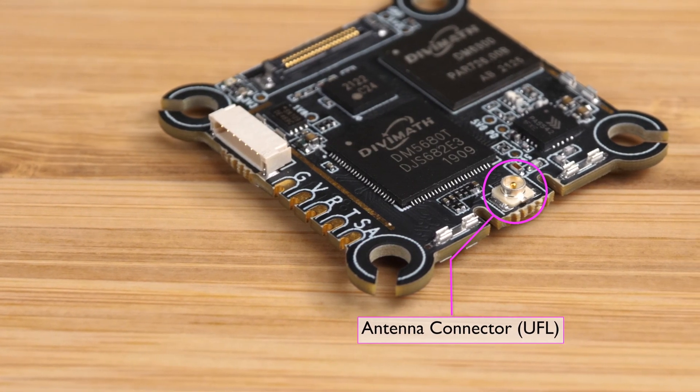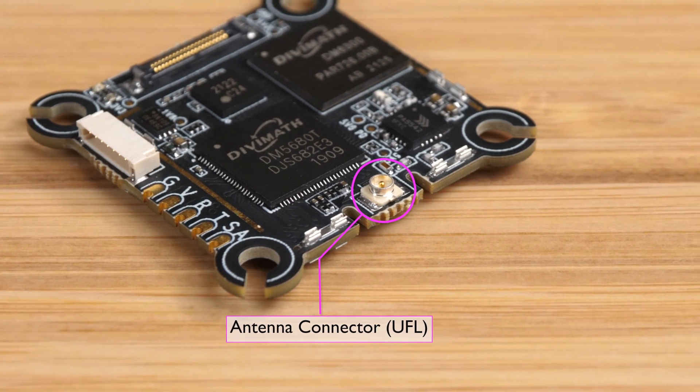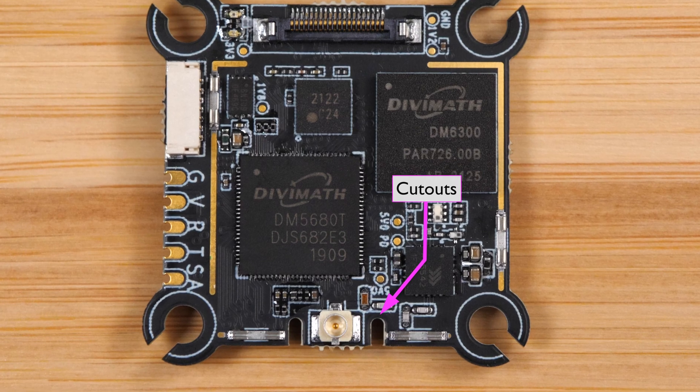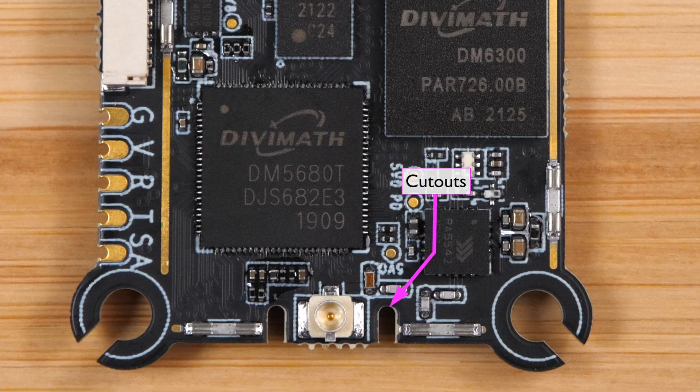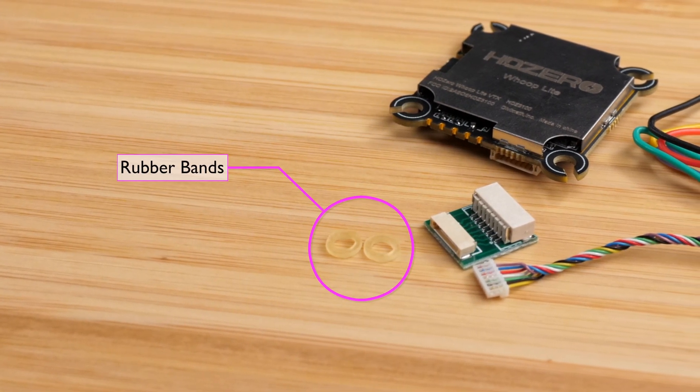The antenna connector is the UFL connector like we typically see on HD0 VTXs but there is a slight change here. They've cut out the board a bit on either side of the connector and the idea behind this is that you can put something like a dental rubber band around the board and antenna connector to hold it in place. They actually include a few tiny rubber bands for that purpose.